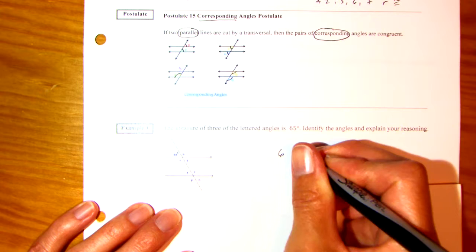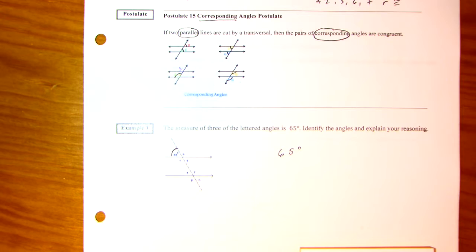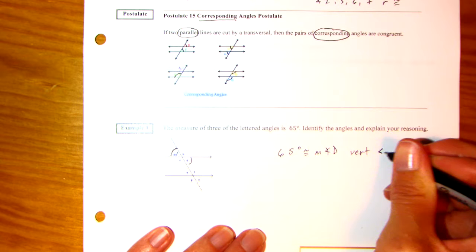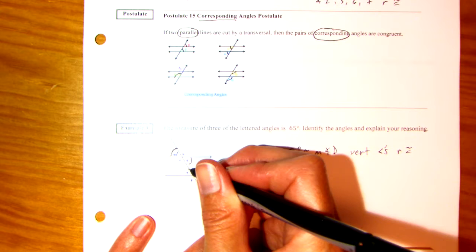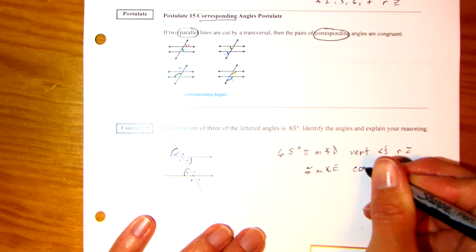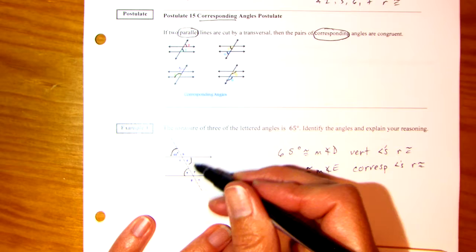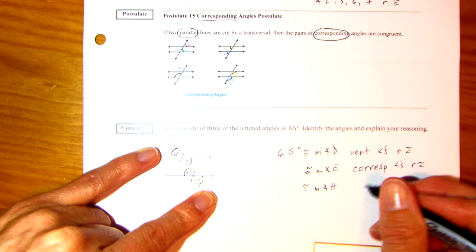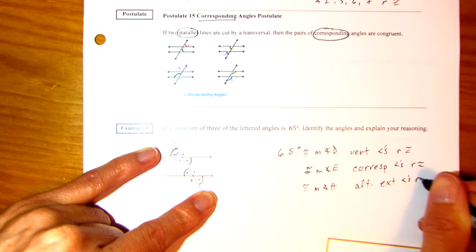Example 1. The measure of the three-lettered angles is, of three of the lettered angles is 65. Identify the angles and explain your reasoning. So we have 65 degrees. That's this angle right here. So what other three angles are going to be congruent to that? Well, angle D. Why? Because they're vertical angles. And then 65 and E. I think that's the letter E. Those are called corresponding angles.